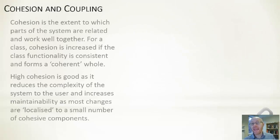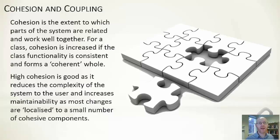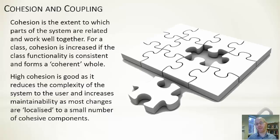The other notion is cohesion: the extent to which parts of the system are related and work well together. It's about how well-defined a component is — if we're thinking about animating something, we should have a class or small number of classes that encapsulate all elements of that, tied together nicely. We don't want a bit over here, a bit in another class, and a bit in an unrelated one over there. The bits that should be stuck together are stuck together. There's a fine line between ensuring cohesion while keeping unrelated things lightly coupled through interfaces.